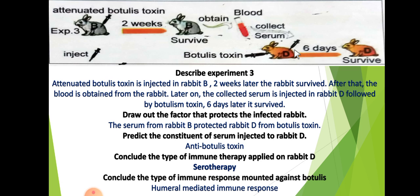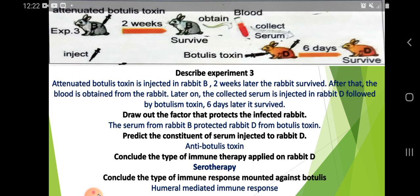I want you to draw the experiment — all of it, with arrows and labels. If drawing the rabbit is difficult, you can draw a circle or symbol to represent it, and label them Rabbit A, Rabbit B, Rabbit C. Write the questions and answers together and study them well.